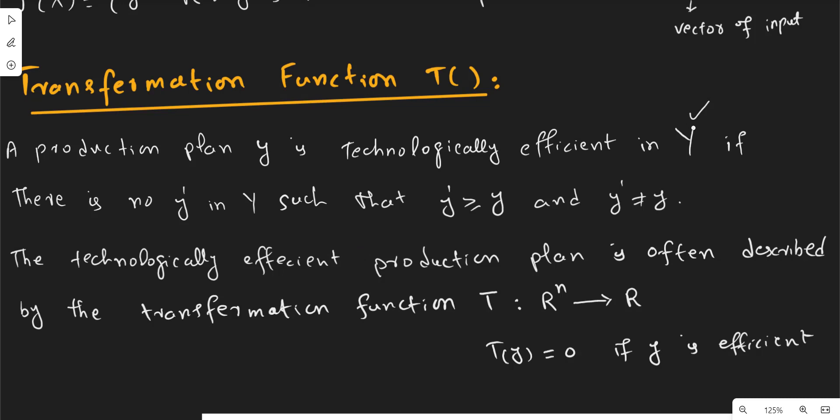That is the combination of input and output. Let's suppose y be any technologically efficient production plan. It should be such that there is no other production plan which can give you more output than this one in the same production possibility set.